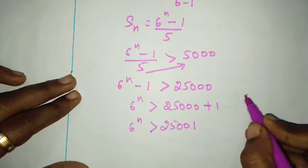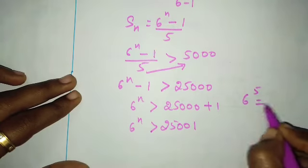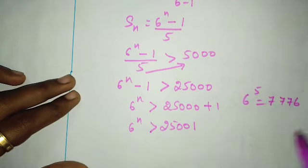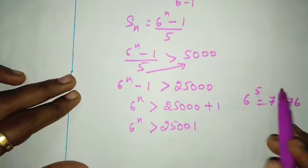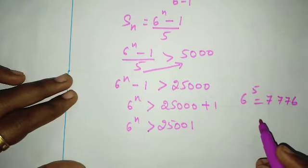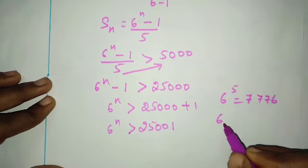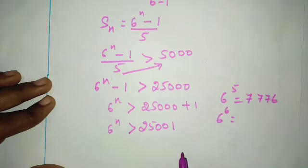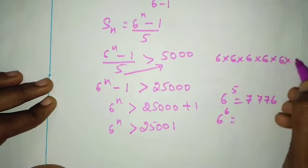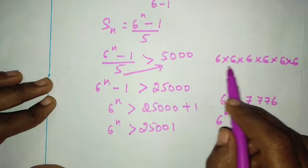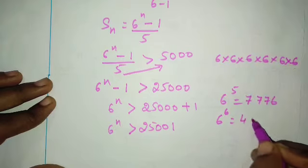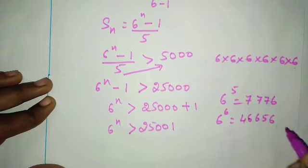Let's test values. 6 power 5 equals 7,776. That's 6 times 6 times 6 times 6 times 6, which gives 7,776. Now let's find 6 power 6, which is 6 times 6 times 6 times 6 times 6 times 6.